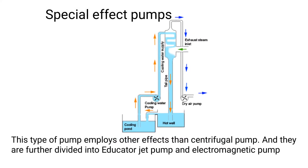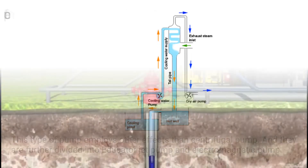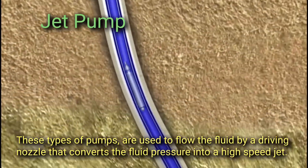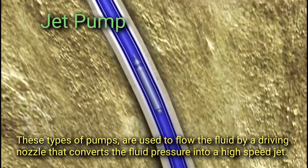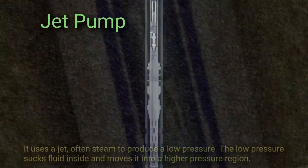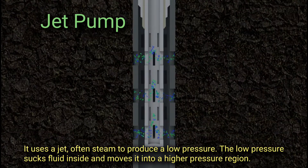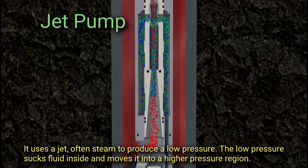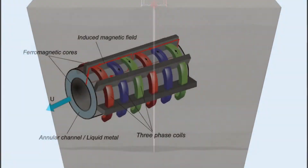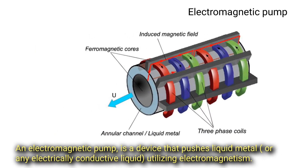Special effects pumps employ other effects than centrifugal action and are further divided into eductor jet pumps and electromagnetic pumps. Jet pumps are used to flow fluid by a driving nozzle that converts the fluid pressure into a high-speed jet. It uses a jet — often steam — to produce a low pressure. The low pressure sucks fluid inside and moves it into a higher pressure region.